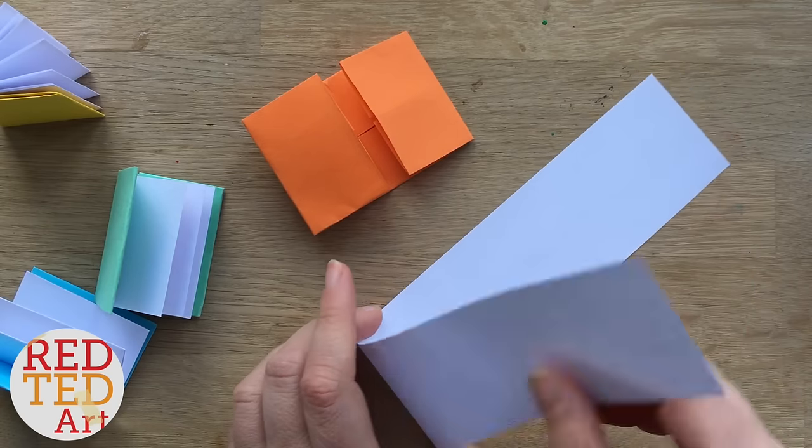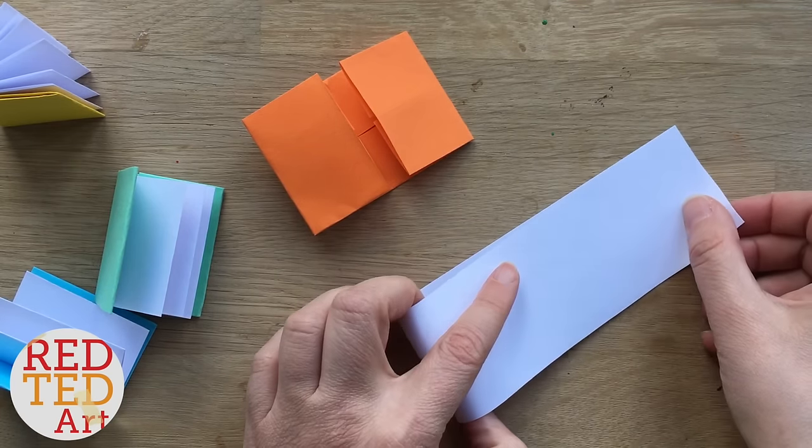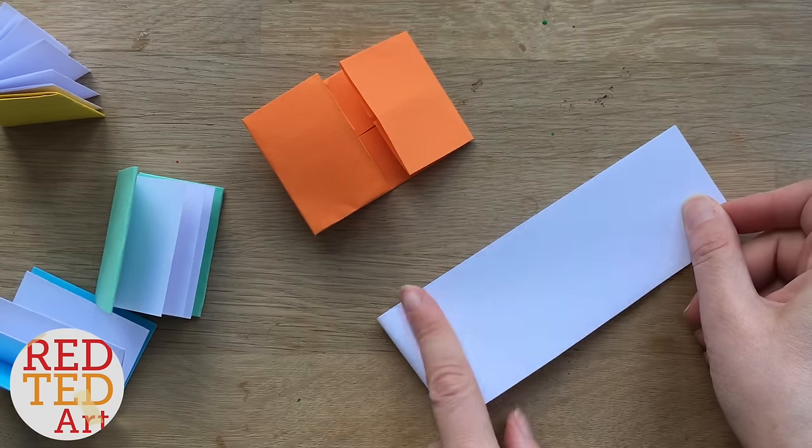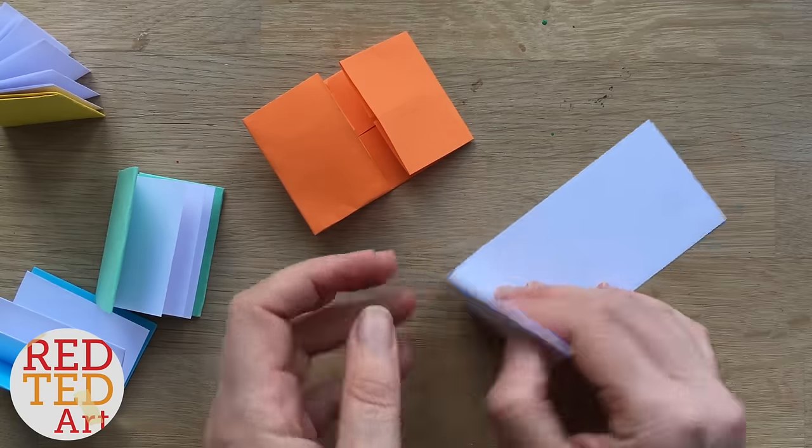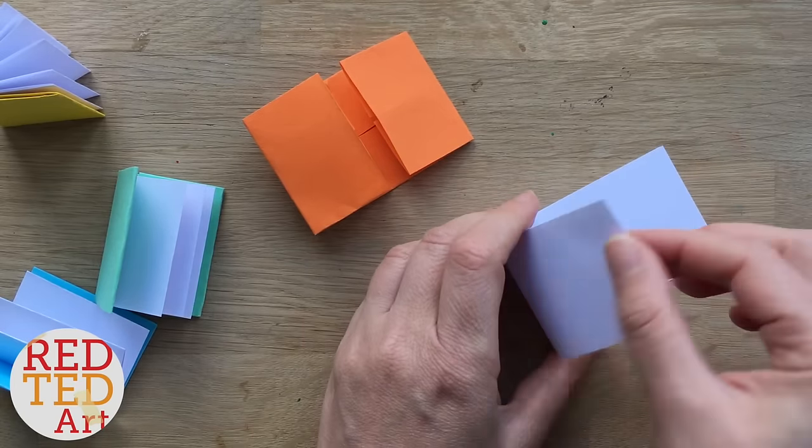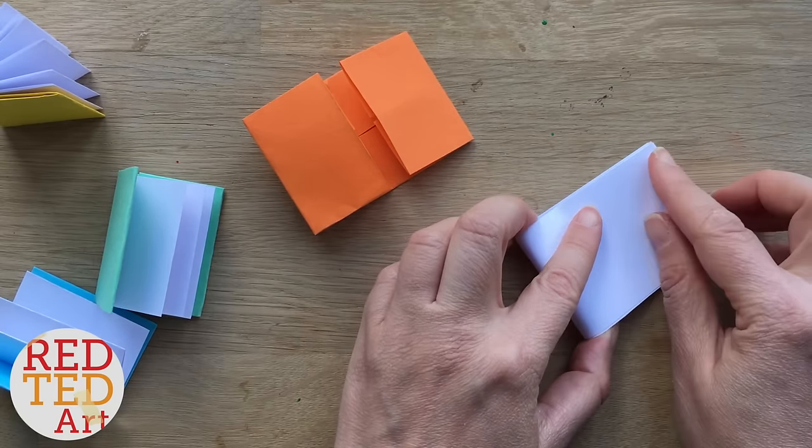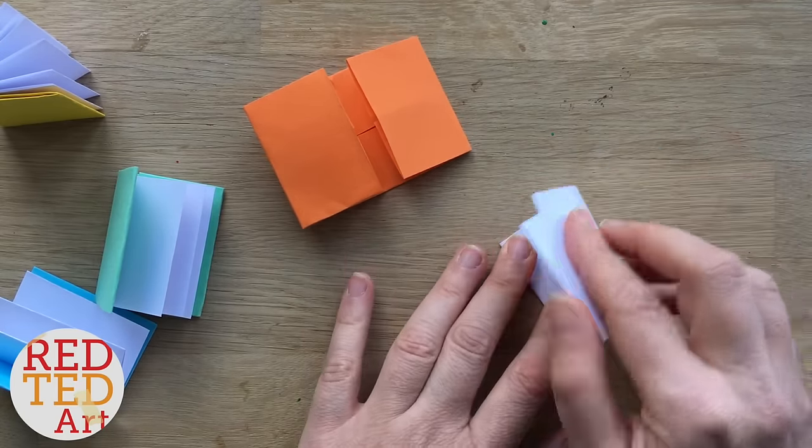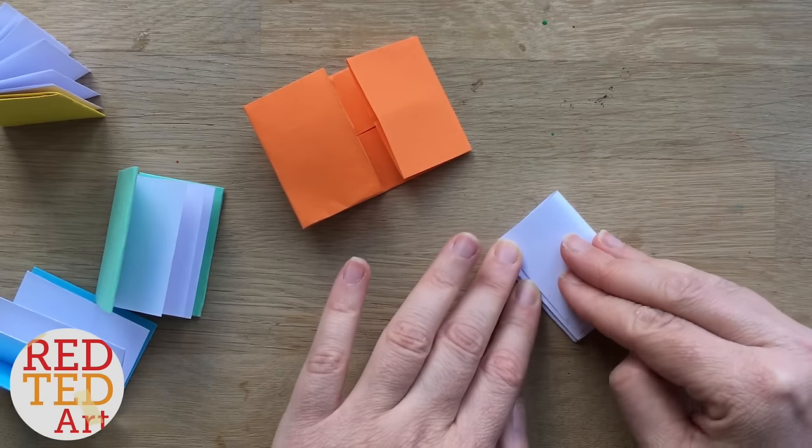To make this as neatly as possible, I've started off by just creating some guiding folds. So I'm folding it in half—don't make this crease too strong because you're going to change it again in a minute. So I've kept folding it in half a few times.